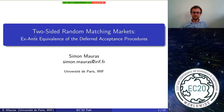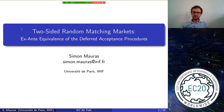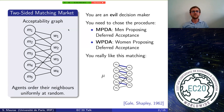Two-sided matching markets are markets with two categories of agents — for example, students and schools, jobs and workers, or men and women. We use this example in the paper. There is a bipartite graph with men on the left and women on the right, where an edge means two persons know each other — so m1 and w1 know each other, but m1 and w3 do not.